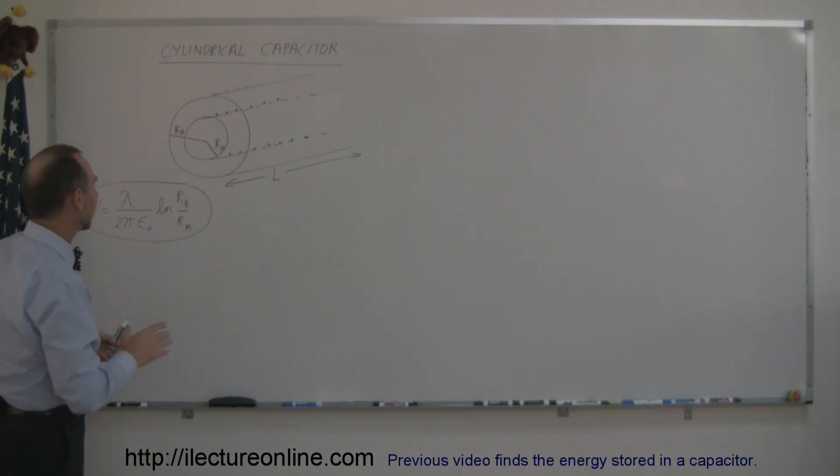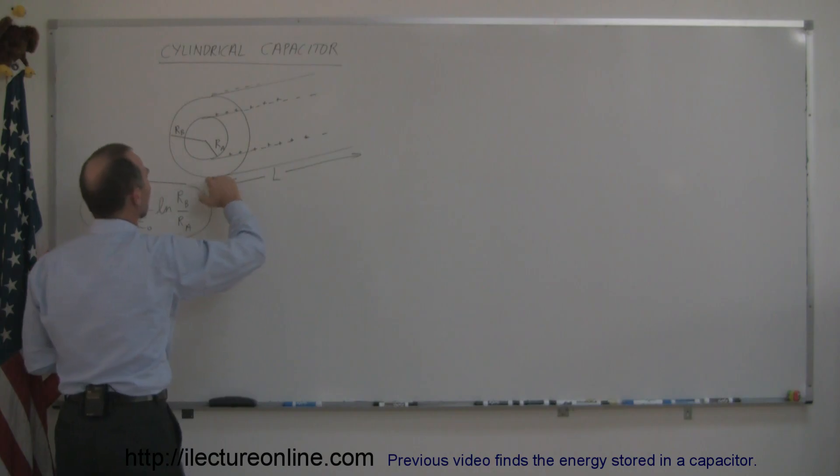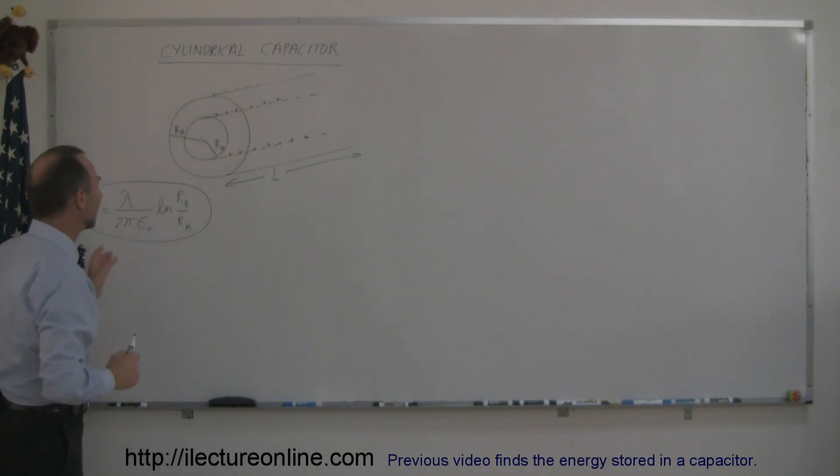And just to help us along, I wrote down the equation of the potential difference caused by such a device, a cylindrical capacitor with another shell around it, and the voltage between the two regions is defined by this.